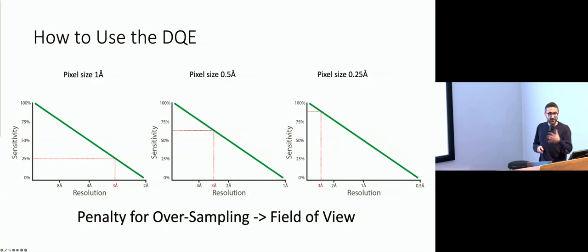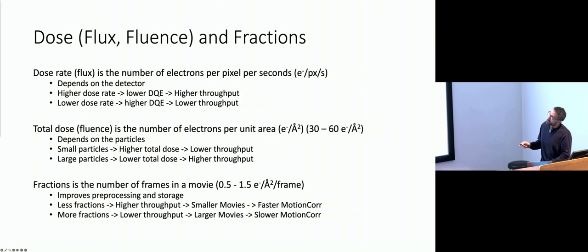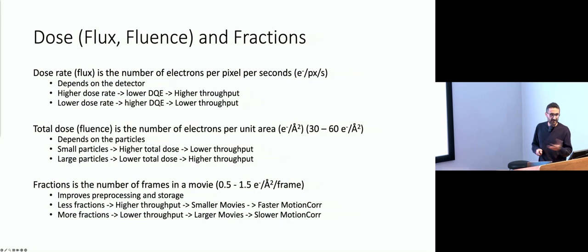When choosing the detector, we also need to consider dose rate, total dose, and fractions. Dose rate is the number of electrons per pixel per second, usually expressed as electrons per second. Higher dose rate gives you lower DQE but much higher throughput — good if your sample is very heterogeneous and needs a lot of data. Lower dose rate gives higher DQE with lower throughput, which is better if you're working with a rock-solid, homogeneous, stable sample.